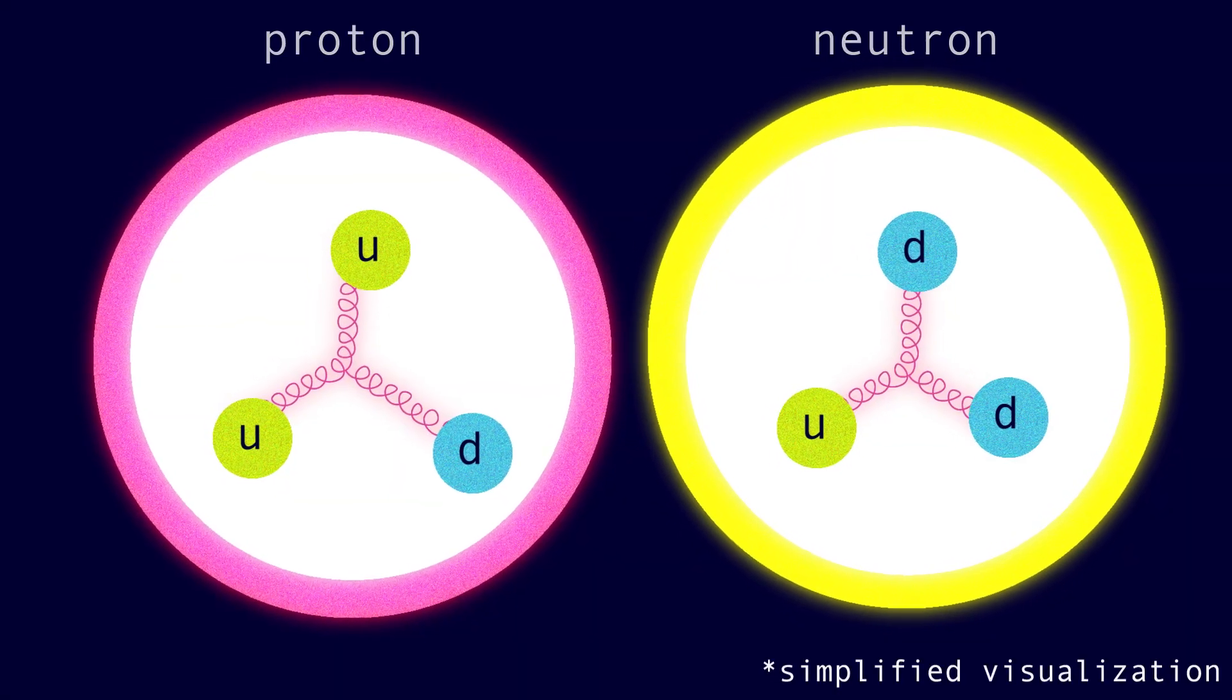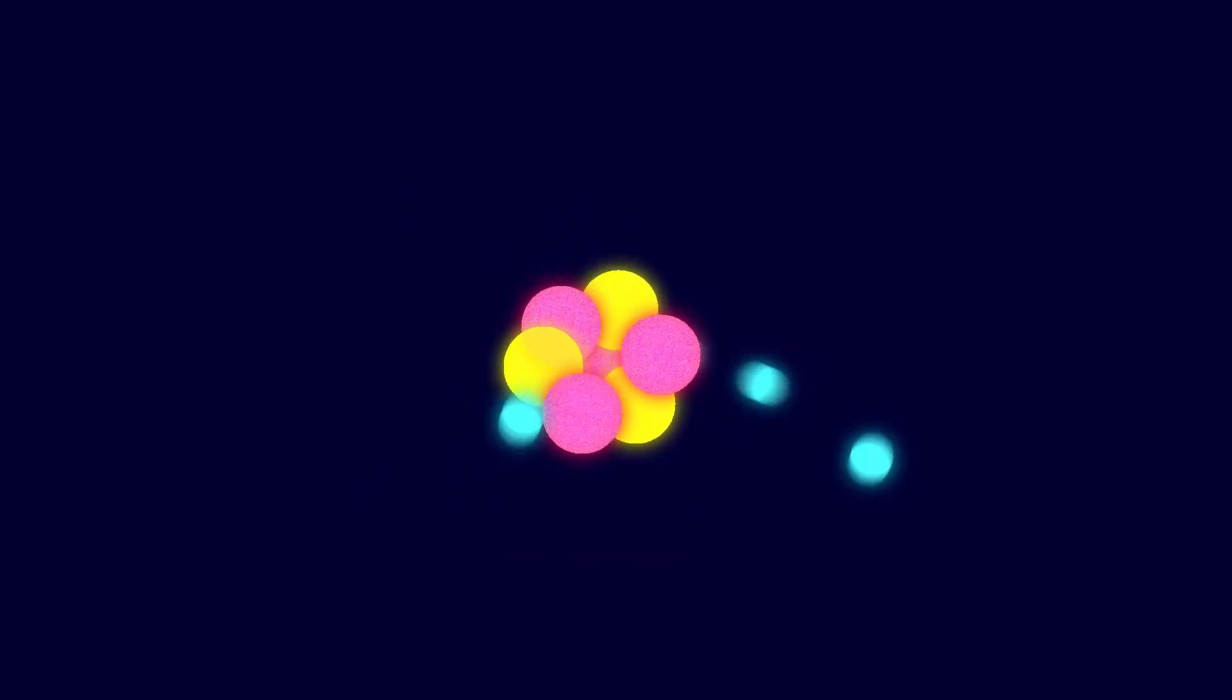While we don't know why the Higgs field exists, we proved its existence in 2012 by discovering the Higgs boson, an excitation of the Higgs field. By serving as a cosmic speed limit, the field allows quarks to make up protons and neutrons, which make up atoms. Atoms make up everything around us, including you.